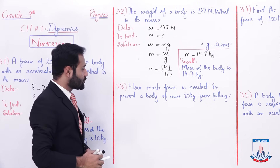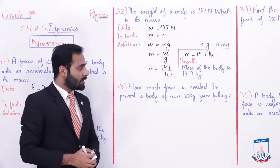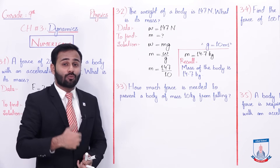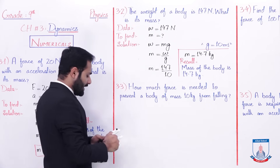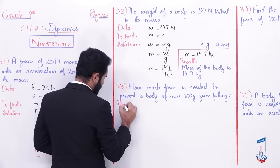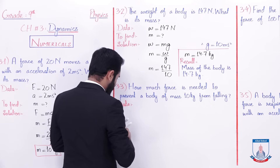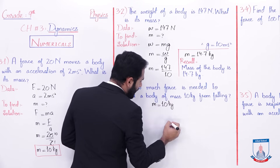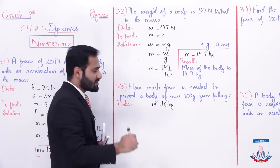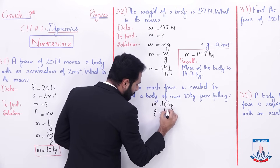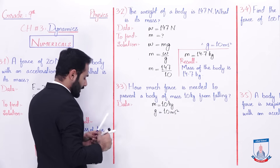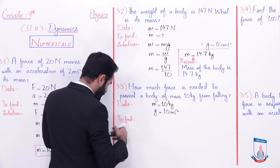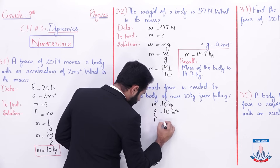Now the next numerical. Numerical 3.3 — how much force is needed to prevent a body of mass 10 kilogram from falling? First of all data note down karte hain. Yahan par aapko mass given hai which is 10 kg. Kyunke body ne fall karna hai, that means yahan par gravitational acceleration act kar raha hoga. G ki value hoti hai 10 meter per second square, and what you have to find is force.